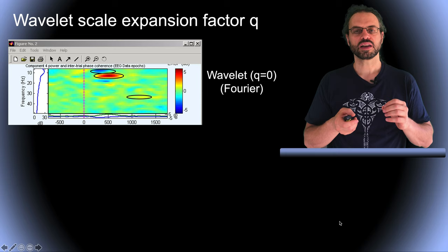So, what we need is something in between, such as the scale expansion factor of 0.8, for example. Let's quickly review alternative methods for time-frequency decomposition of EEG data.